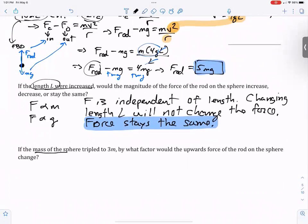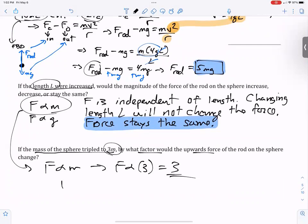If the mass of the sphere is tripled to 3M, by what factor would the upward force change? We already established that force is proportional to mass. So force is proportional to mass and you triple the mass, that means force is proportional to 3. By tripling the mass, the force is tripled.